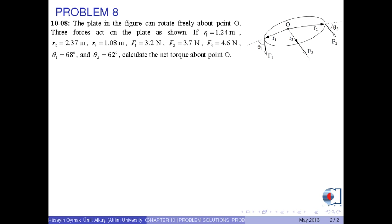The plate in the figure can rotate freely about point O. Three forces act on the plate as shown. The magnitudes of the vectors R1, R2, and R3, and forces F1, F2, and F3 are given. Also, theta1 and theta2 are given. With these known values, calculate the net torque about point O.